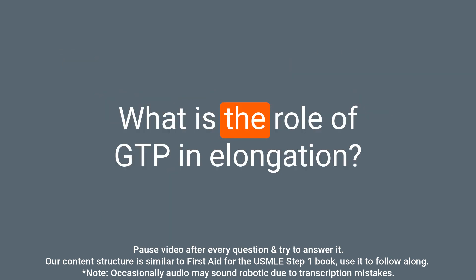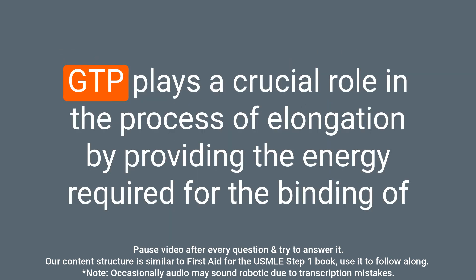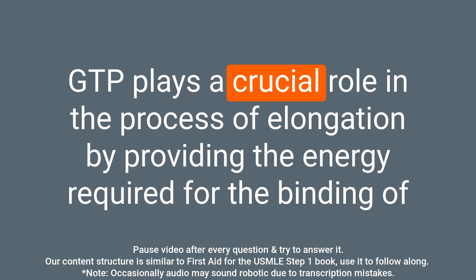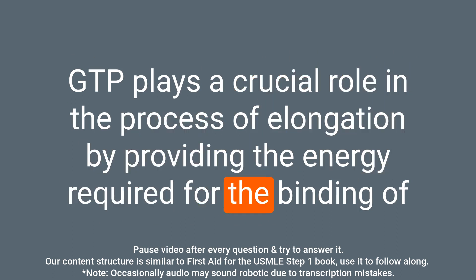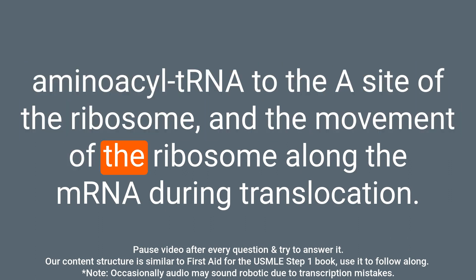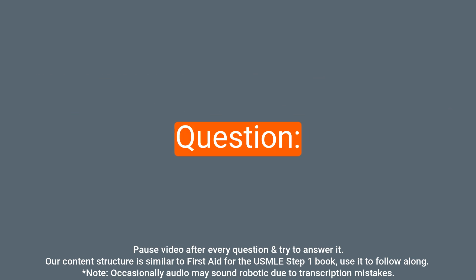Question: What is the role of GTP in elongation? Answer: GTP plays a crucial role in the process of elongation by providing the energy required for the binding of aminoacyl-tRNA to the A site of the ribosome and the movement of the ribosome along the mRNA during translocation.